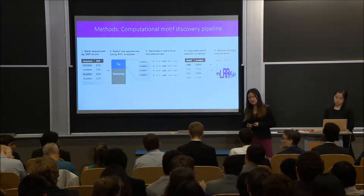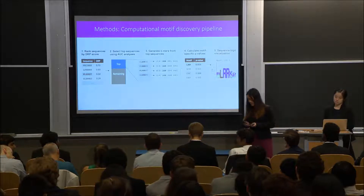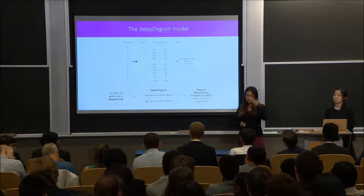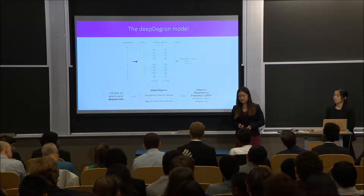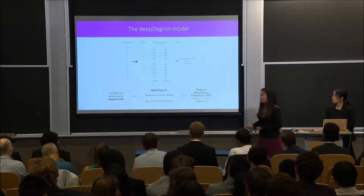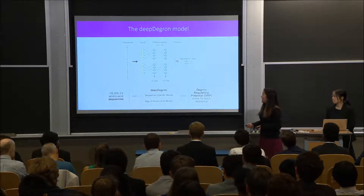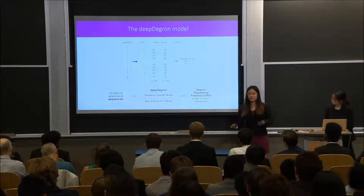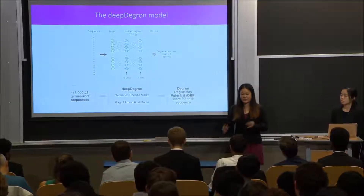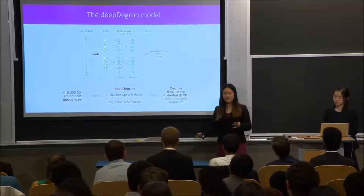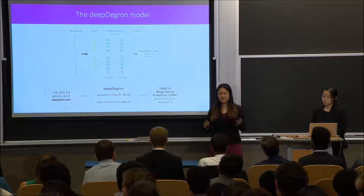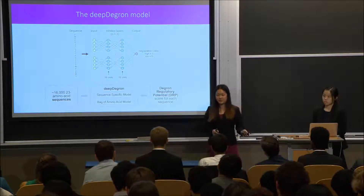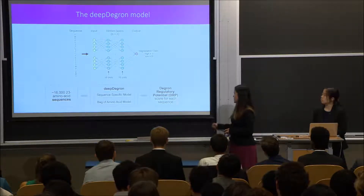Judge question: Is the training data for deep degron from healthy cells, sequences known to contain degrons, or also mutated cancerous ones? The training dataset consists of 16,023 amino acid sequences that were synthesized artificially, so they don't have patient data associated with them. They were marked using GPS systems and fluorescent staining to assess protein stability, and based on these protein stability scores, the degron regulatory potential score was assigned.